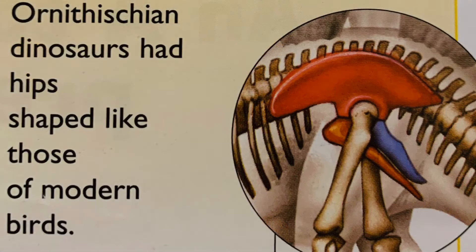Fact: There are two major groups of dinosaurs. Saurischian dinosaurs had hips shaped like those of modern lizards, and included all meat-eating dinosaurs and sauropods. Ornithischian dinosaurs had hips shaped like those of modern birds.